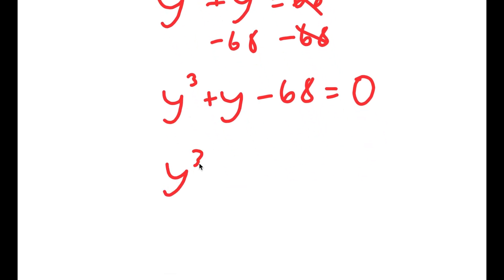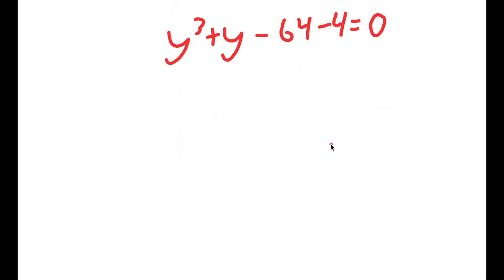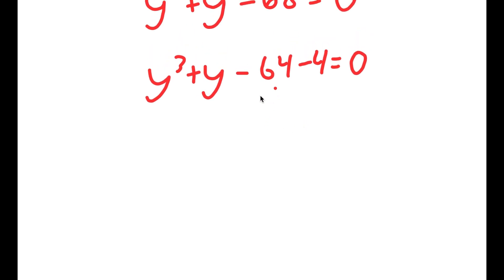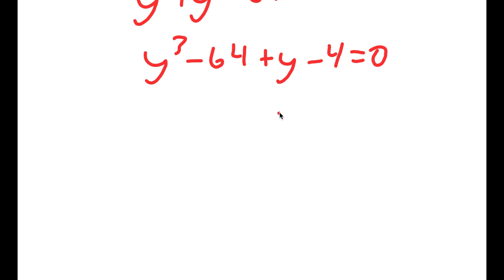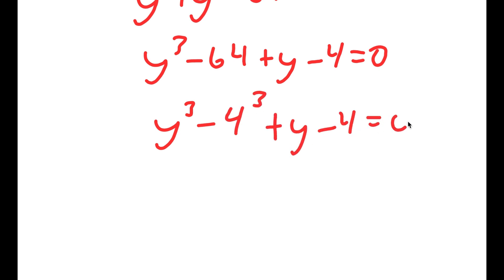I can rewrite negative 68 as negative 64 minus 4, and rearrange to get y cubed minus 64 plus y minus 4 equals 0. Since 64 is 4 cubed, this becomes y cubed minus 4 cubed plus y minus 4 equals 0.